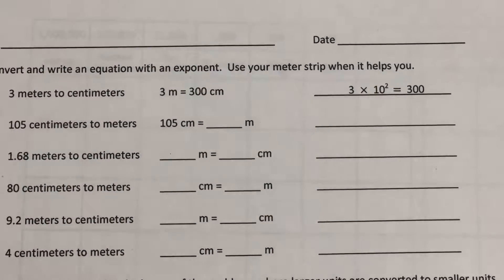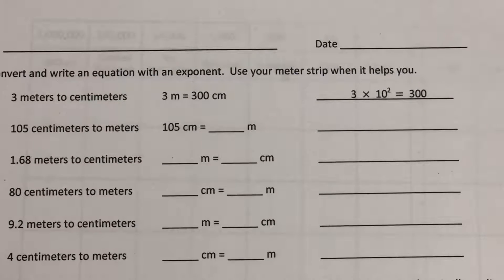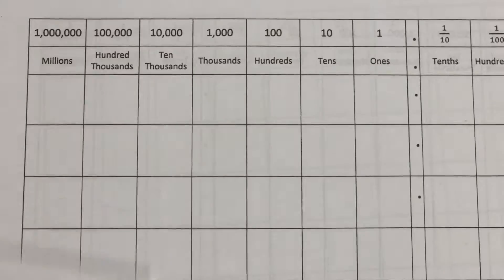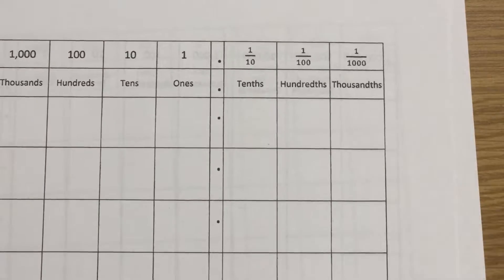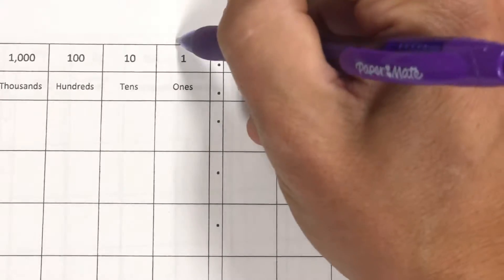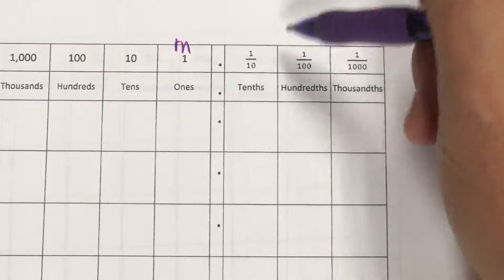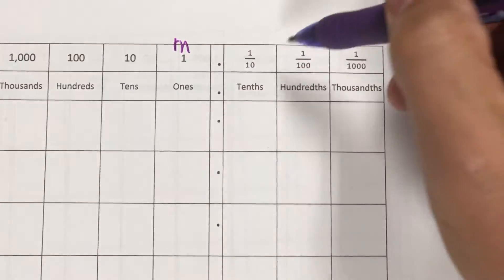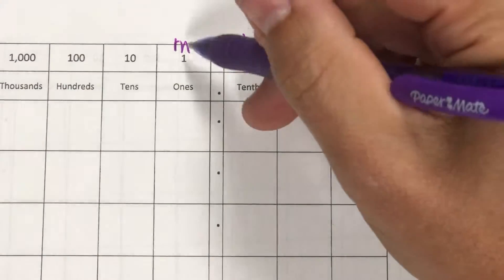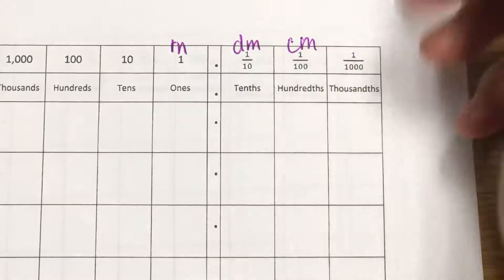For this homework assignment, Engage New York presents a clever way of using the place value chart to do metric conversions. We take our place value chart and let the ones place represent a meter. Then the tenths place is a decimeter, the hundredths place is a centimeter, and the thousandths place is a millimeter.